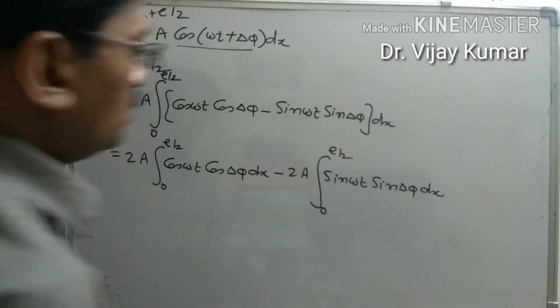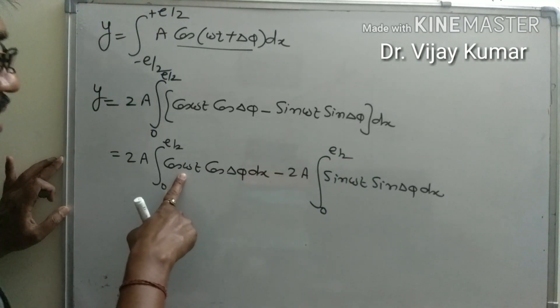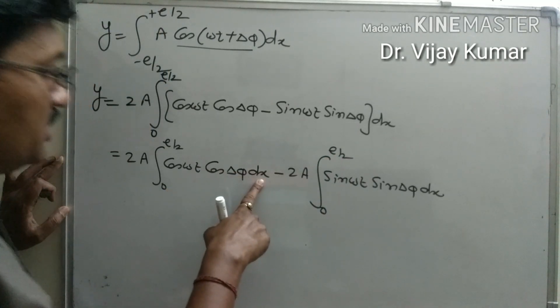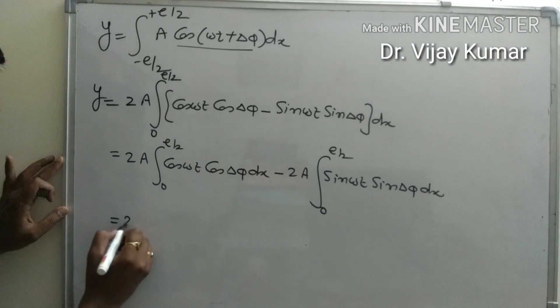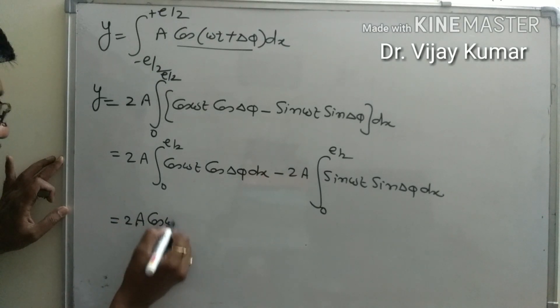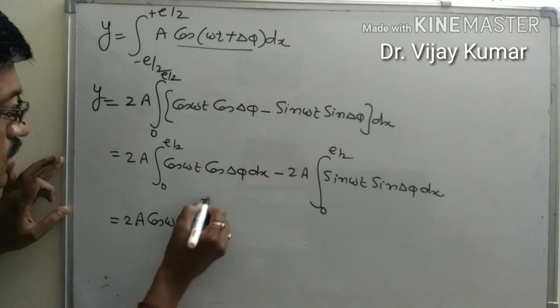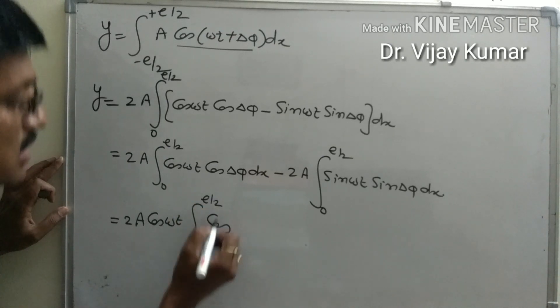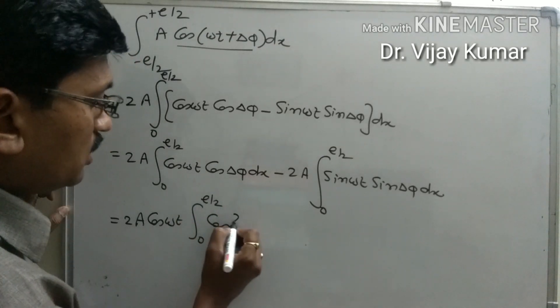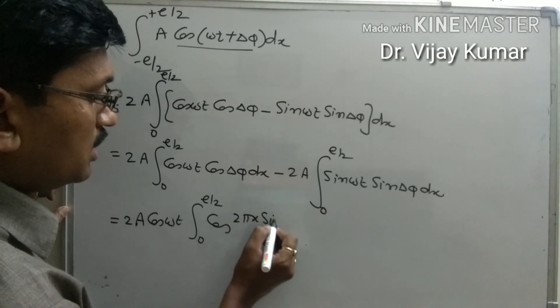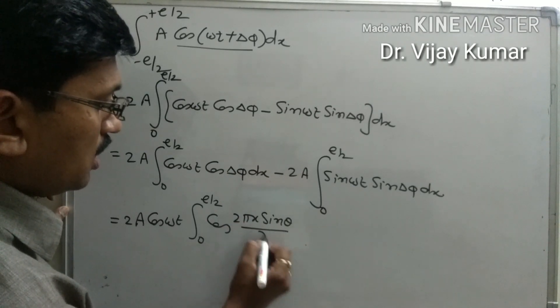Since cos(omega t) is constant when x is the variable, it becomes twice a cos(omega t) with the limit from 0 to e by 2 of cos(delta phi) dx, where delta phi equals 2 pi x sin(theta) over lambda.